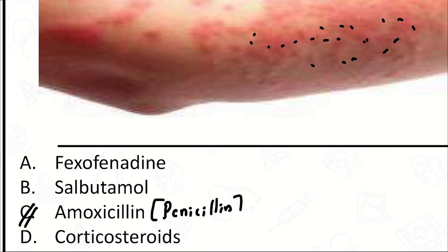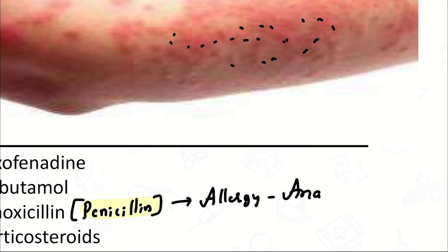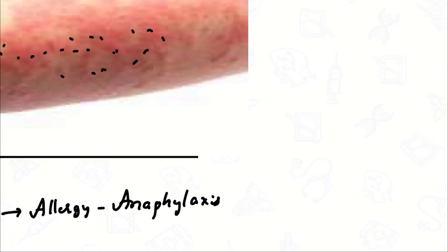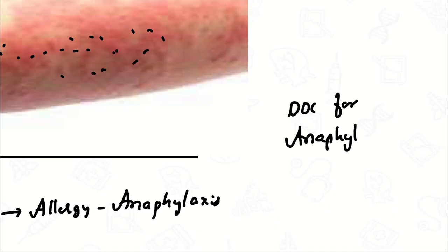Amoxicillin belongs to the penicillin group of antibiotics — a type of beta-lactam antibiotic. Penicillin is obtained from the fungus Penicillium notatum. Some people are allergic to that fungus and can develop an allergy that can progress to anaphylaxis. That is why before giving penicillin we need to give a test dose. Even when the test dose is negative and we start IV, there can still be a chance of anaphylactic shock.